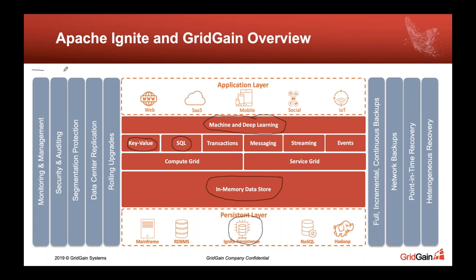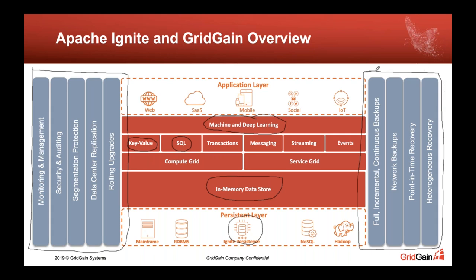On the left and right-hand sides of the diagram, we can see these gray boxes — these are some enterprise features available from GridGain. In the middle, all capabilities are available with the open source version. On the left and right sides are enterprise features: monitoring and management, additional security and auditing, data center replication, and rolling upgrades — particularly useful in larger enterprise environments. GridGain provides these features and capabilities and would be happy to discuss them further.